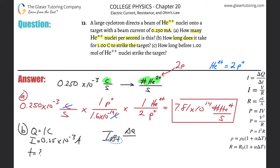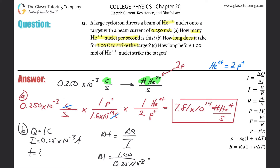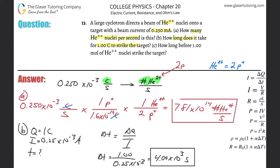So the change in time is going to be equal to the charge divided by the current — so 1.00 divided by 0.25 times 10 to the minus 3. And it looks like three sig figs again. So it's just one divided by 0.25 times 10 to the minus 3, which gives about 4,000. So 4.00 times 10 to the 3rd seconds — that's how long it would take for that amount of charge to strike the target.